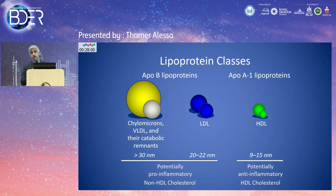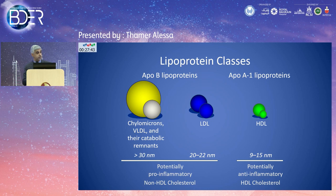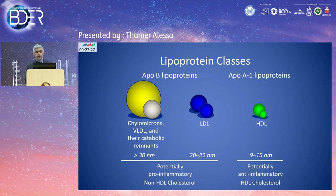An important factor when talking about therapies is to understand how these therapies actually work and the basics of changes in lipid profiles in diabetic patients. Lipids are carried in specific vehicles called lipoproteins, which come in different classes, each with a different activity level for developing atherosclerosis. Dividing lipoproteins into two major components: ApoB lipoproteins and ApoA1 lipoproteins. The ApoB lipoproteins are potentially pro-inflammatory and cause direct effects on atherosclerosis — what we call non-HDL cholesterol.